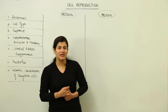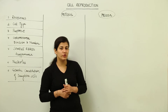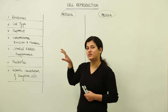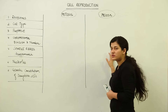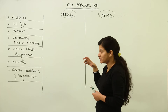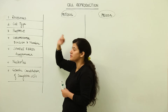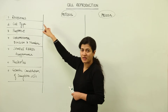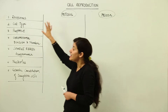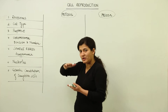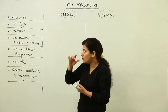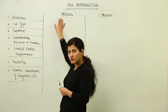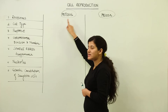Hello students. Now let us take a comparative account of both the cell divisions. We are going to discuss how mitosis is different from meiosis. First of all, let's talk about the number of divisions which would take place in both types of cell division — how many times the cell would be divided. When I talk about divisions, that means karyokinesis and cytokinesis.